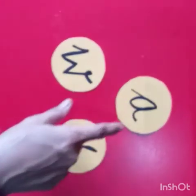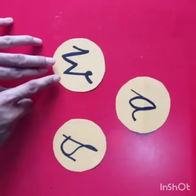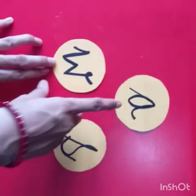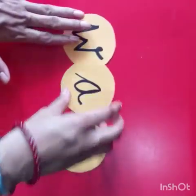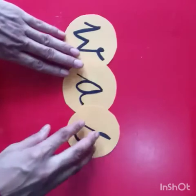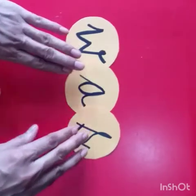One, two, three. Three alphabets, again. W. A. S. Join the alphabet. Now, read.